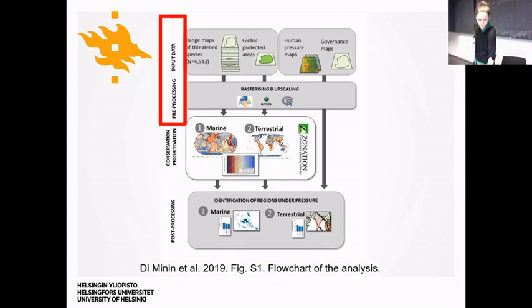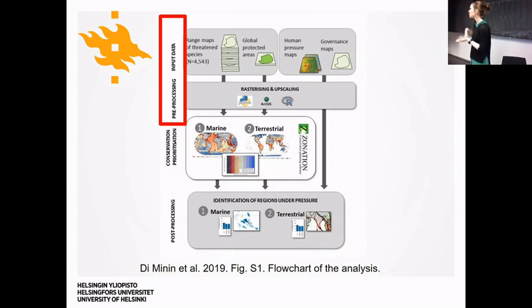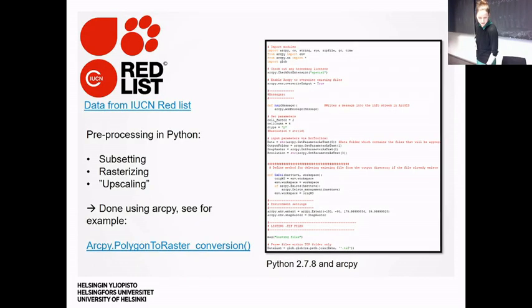My role in that analysis was at the starting point of the workflow — processing more than 4,000 species or subspecies polygon layers. The process involved rasterizing and mapping data at different resolution levels. You could imagine doing that manually 4,000 times — it would take a lot of time and introduce many errors. So we used Python for that.